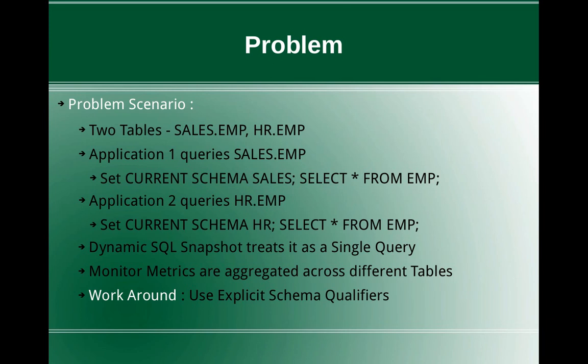The monitor metrics are aggregated across different tables: the number of records, the type of logs, the CPU time — everything. Since the nature of the query text is the same, it aggregates everything based on the SQL statement query text rather than the context of the execution. So all the metrics become incorrect — whatever we conclude becomes actually incorrect data.